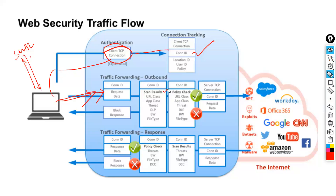Data must go through different scanning processes. The data might contain malware; URL classification determines if a URL is allowed or blocked; threat prevention checks for threats; data loss prevention (DLP) checks for sensitive data leakage; bandwidth control is applied; and file type inspection checks what type of file is being uploaded or downloaded. Based on the scan results, if all scans pass, you move to the next step. If any scan fails, you receive a block response page.